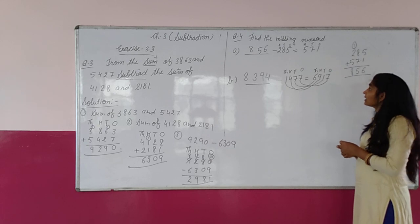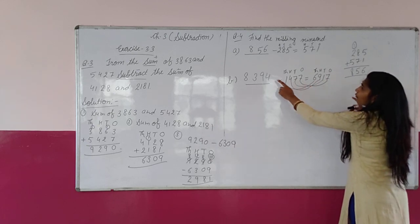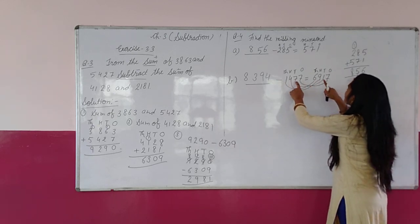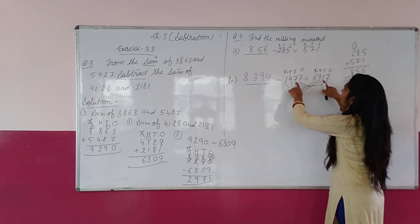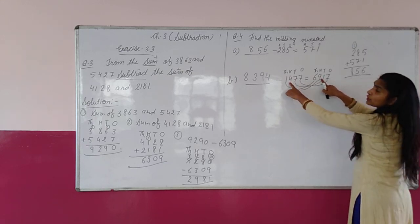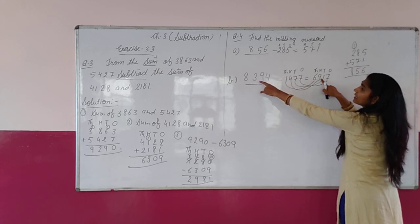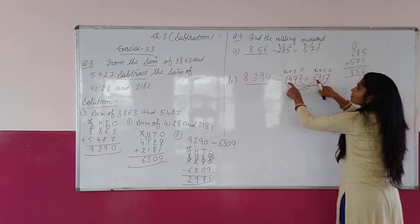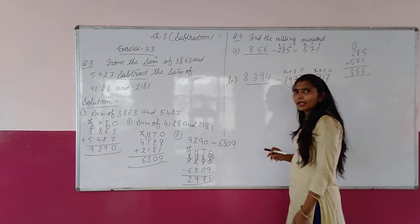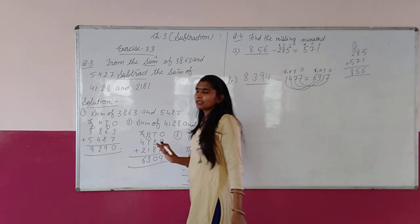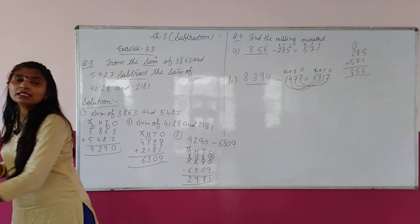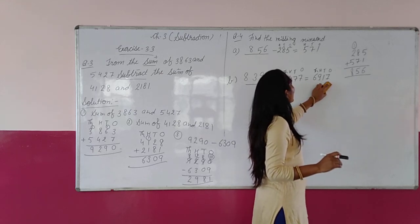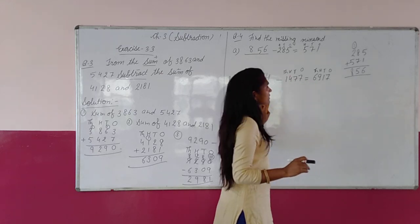Check करते हैं: 7 plus 7 = 14, 14 के लिए 4, 1 carry. 7 plus 1 = 8, and 1 carry = 9. 9 plus 4 = 13, 13 के लिए 3, carry 1. 6 plus 1 = 7, and 1 carry = 8. Understand — so in this way we have to do the solution, direct भी add कर सकते हैं.